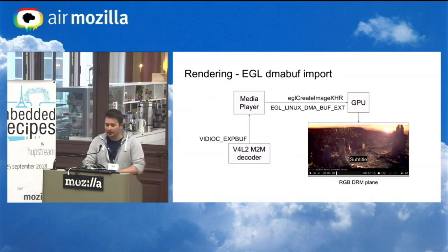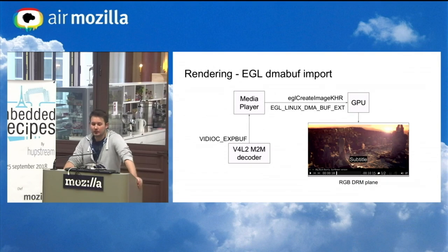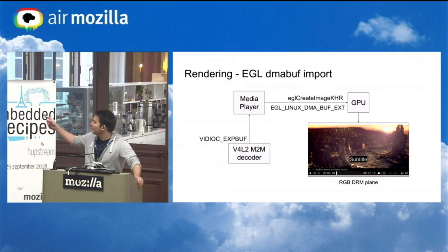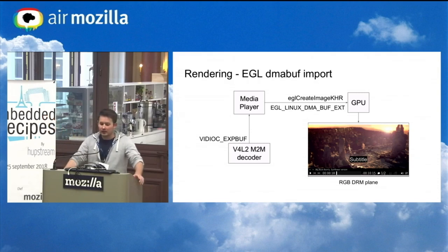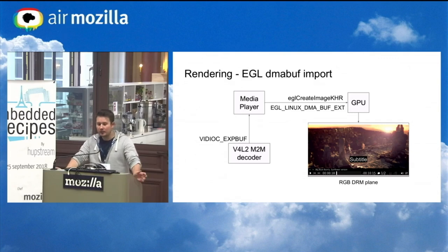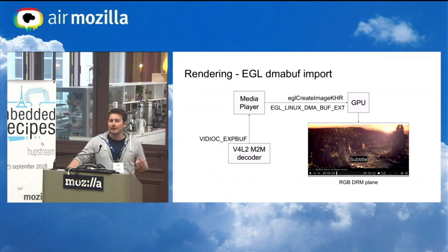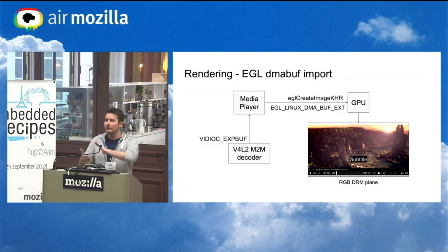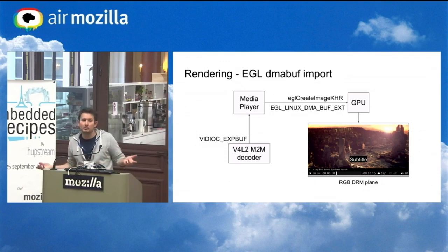The other method, which is also zero copy, is to use only the GPU to do everything. You still export the buffer from the decoder with the same ioctl. There is an EGL extension called EGL_EXT_image_dma_buf_import which allows you to import a frame buffer into the GPU. So you can render everything via the GPU on the same plane, for example if you only have one plane.